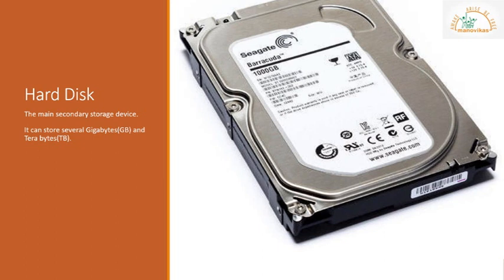Some commonly used secondary storage devices are: first, the hard disk. The hard disk is the main secondary storage device within a computer. It can store several gigabytes and terabytes of data and is used for storing applications and files for the user. Nowadays, external hard disks are also available that can be plugged into your computer through USB ports. This lets you take files with you, transfer them to other computers, or instantly add storage to your computer or network without any technical hurdles.